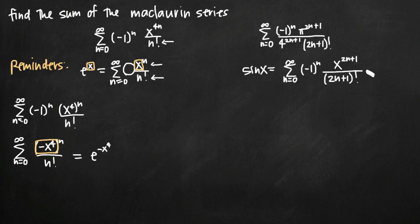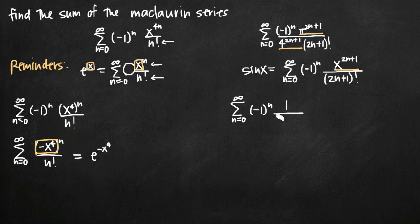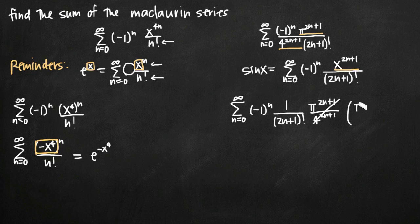The only difference is that the well-known series has x to the 2n plus 1, while ours has pi to the 2n plus 1 and an additional 4 to the 2n plus 1. We can separate those and pull them into their own fraction. Our series transforms so that we pull pi to the 2n plus 1 over 4 to the 2n plus 1 into a separate fraction. Since these are both raised to the same exponent, 2n plus 1, we can combine them and get pi over 4 all raised to the 2n plus 1.